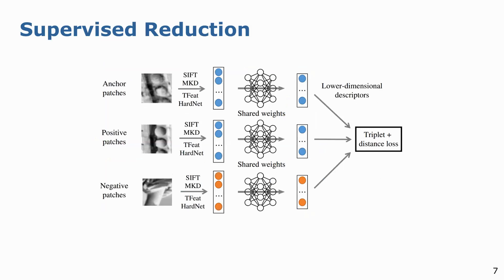For supervised reduction, the main idea is to learn an MLP-based projection such that the distance between the anchor and positive descriptors is smaller than that between the anchor and negative descriptors with a margin in the lower-dimensional embedding space. We use triplet margin loss for guidance.